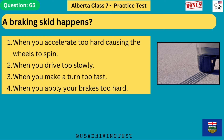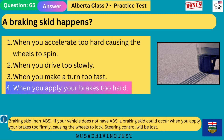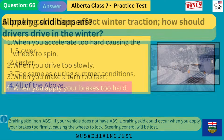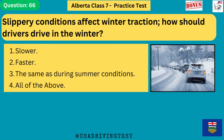A braking skid happens: 1. When you accelerate too hard causing the wheels to spin. 2. When you drive too slowly. 3. When you make a turn too fast. 4. When you apply your brakes too hard. The answer is 4: when you apply your brakes too hard. If your vehicle does not have ABS, a braking skid could occur when you apply your brakes too firmly, causing the wheels to lock. Steering control will be lost.